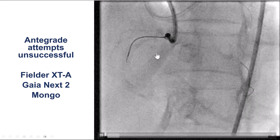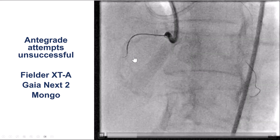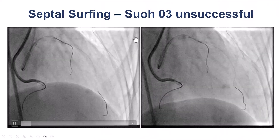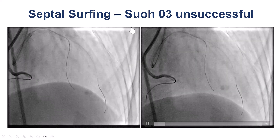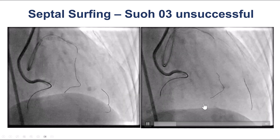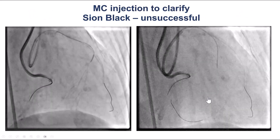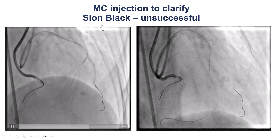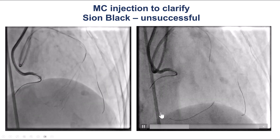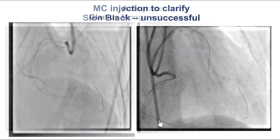We tried with several guide wires antegradely — Fielder XTA, Gaia Next 2, and Mongo — but we could not make much progress, which is not surprising given the calcification. We then tried to go retrograde with the Sion 3 guide wire, but despite surfing and multiple septals, we could not make the connection to the posterior descending artery. We then switched to a polymer-jacketed wire, but the wire kept exiting from the collateral segment into the cavity, so we could not make the connection to the PDA.